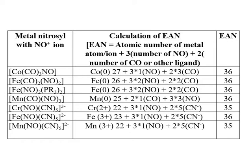With 3 carbonyl ligands providing 6 electrons (2 electrons each), the total EAN becomes 36, which corresponds to krypton's atomic number. For the next example with iron (atomic number 26), 2 carbonyls provide 4 electrons and 2 nitrosyls provide 6 electrons, so the EAN again equals 36.